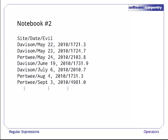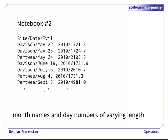The data in notebook number two also has three fields, but these are separated by slashes. Months are reported using their names and are of varying length. The days are also of varying length.